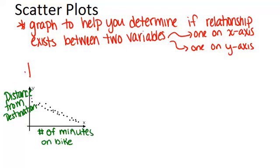So in this first example right here we see the number of minutes on bike is our x-axis variable and distance from destination is our y variable. We have a bunch of points and I noticed that there does seem to be a correlation here because as the number of minutes increases, the distance is definitely going down.